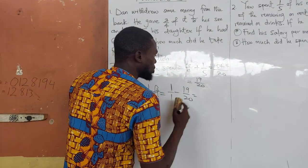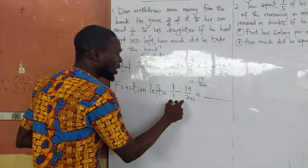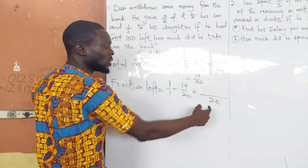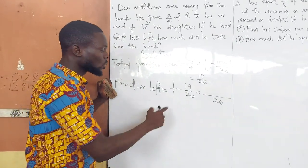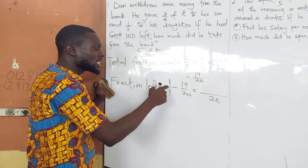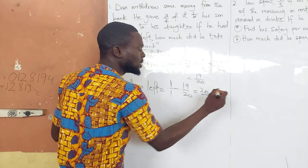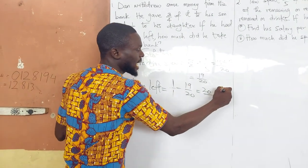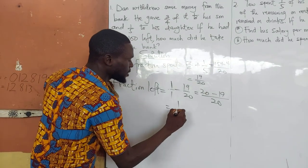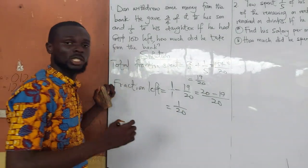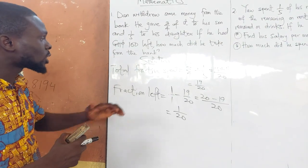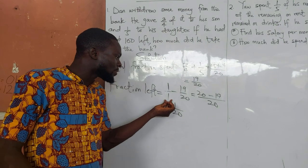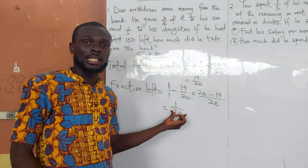Then we find our LCM of the denominators. The LCM is 20, because one can go into 20, and 20 can go into itself. One into 20 is 20 times; 20 times one is 20. 20 into 20 is one; one times 19 is 19. So our fraction left becomes 1 over 20.